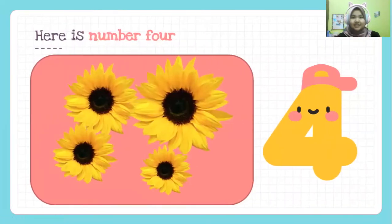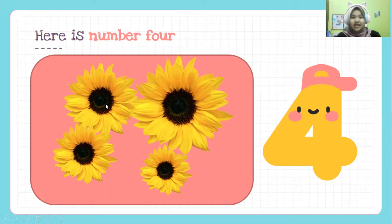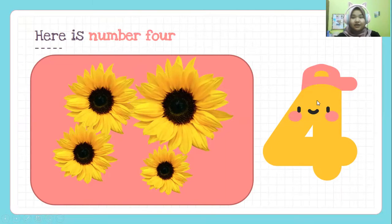Next, here is number four. Number four. These are sunflowers. Let's count together. One, two, three, four. Four sunflowers represent number four.